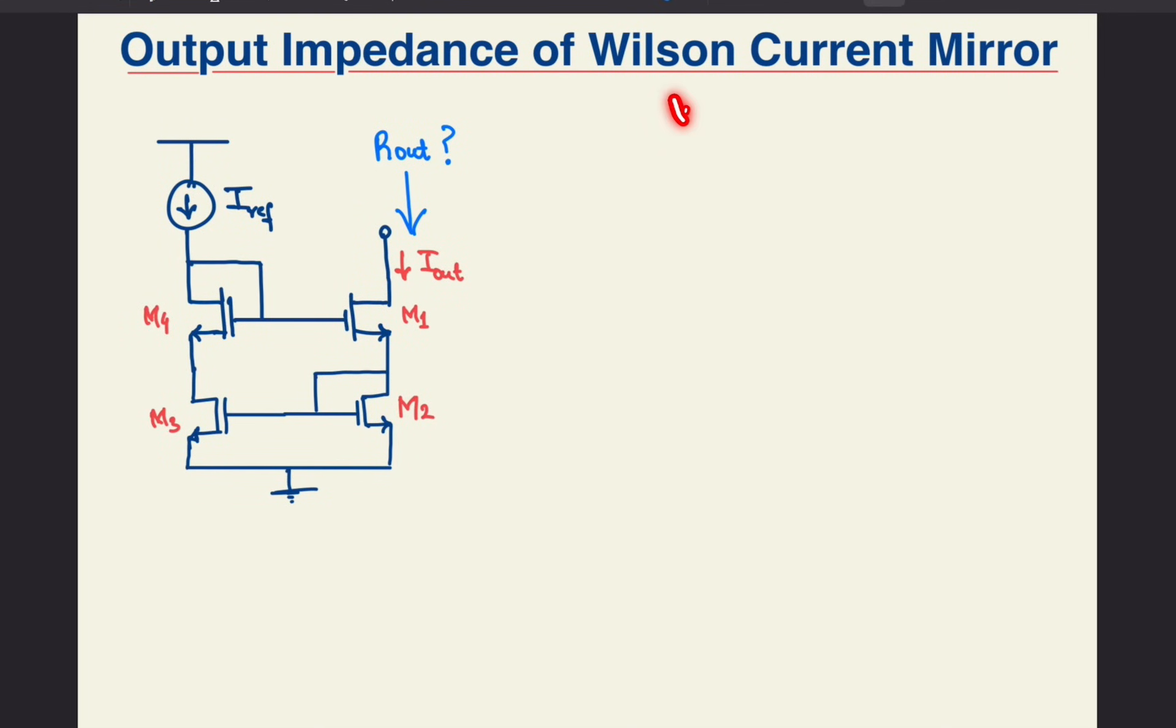Hey, welcome back. The agenda for this video is to discuss the output impedance of the Wilson current mirror. This was quite popular in the BJT era but is now obsolete in the CMOS era.